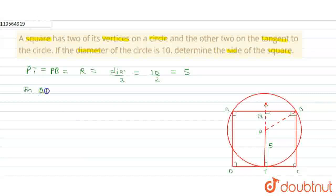In triangle PBQ, we can write that QB² is equal to PB² minus PQ².